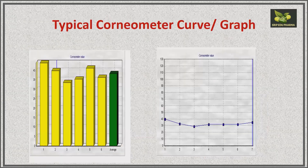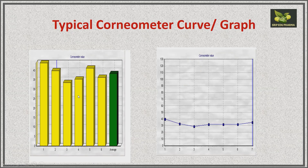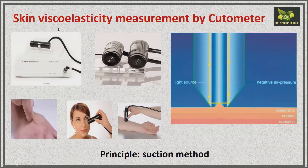This is the typical corneometer curve obtained when taking readings. Values are taken in arbitrary units and at the end an average value is obtained. Both a graph and a curve are obtained from the instrument, and an Excel sheet with all readings is also generated. Initially, plain skin readings are taken without applying any formulation, and then readings are taken after applying the formulation. The cutometer for skin viscoelasticity is shown — both single and dual types are available.